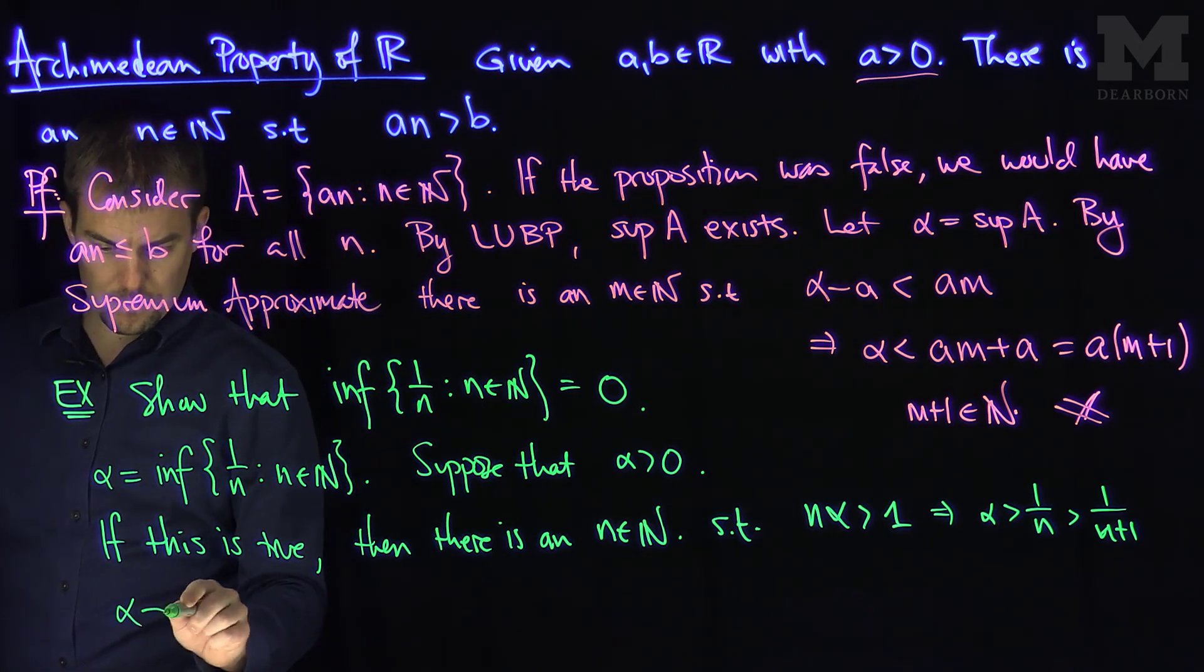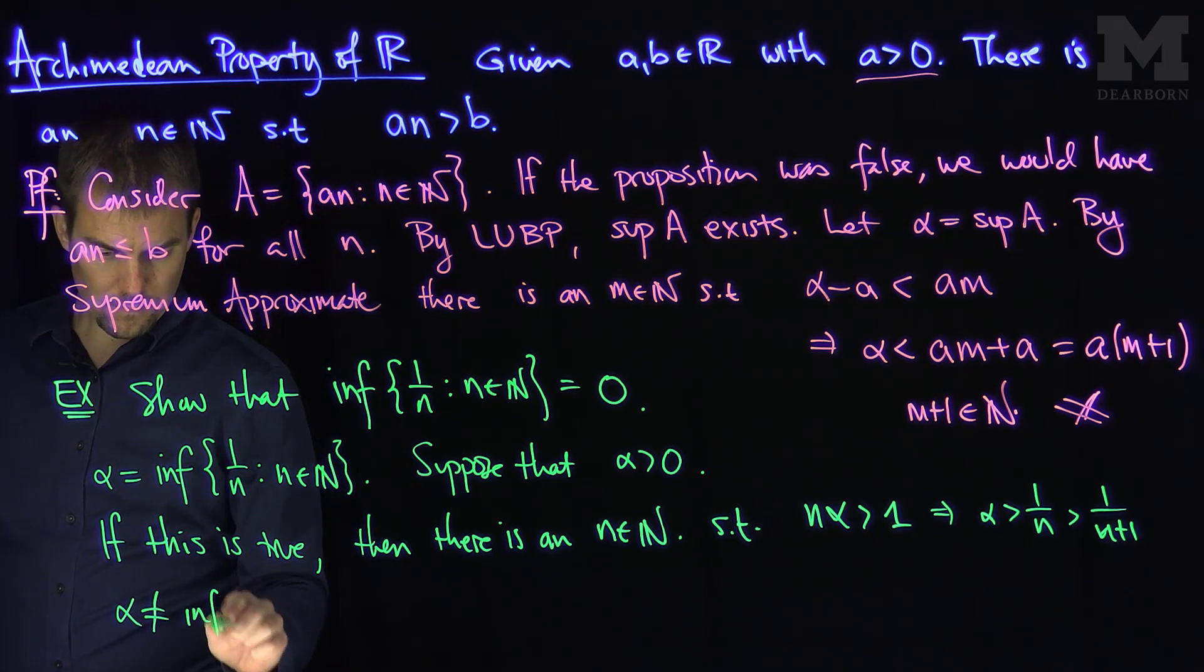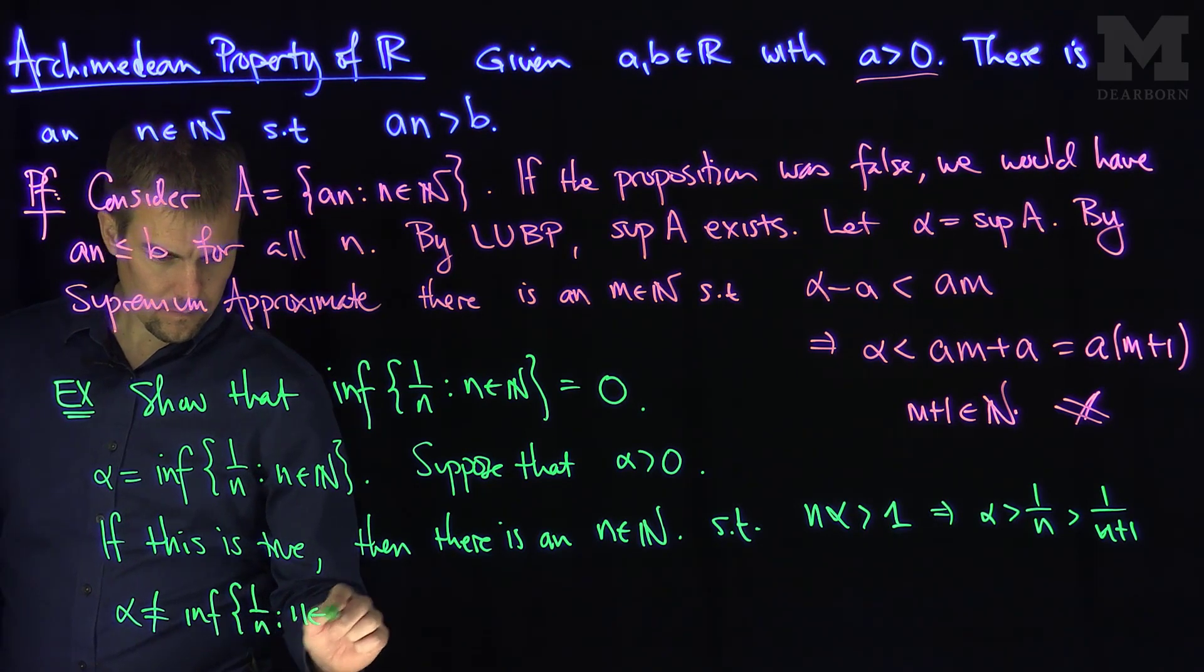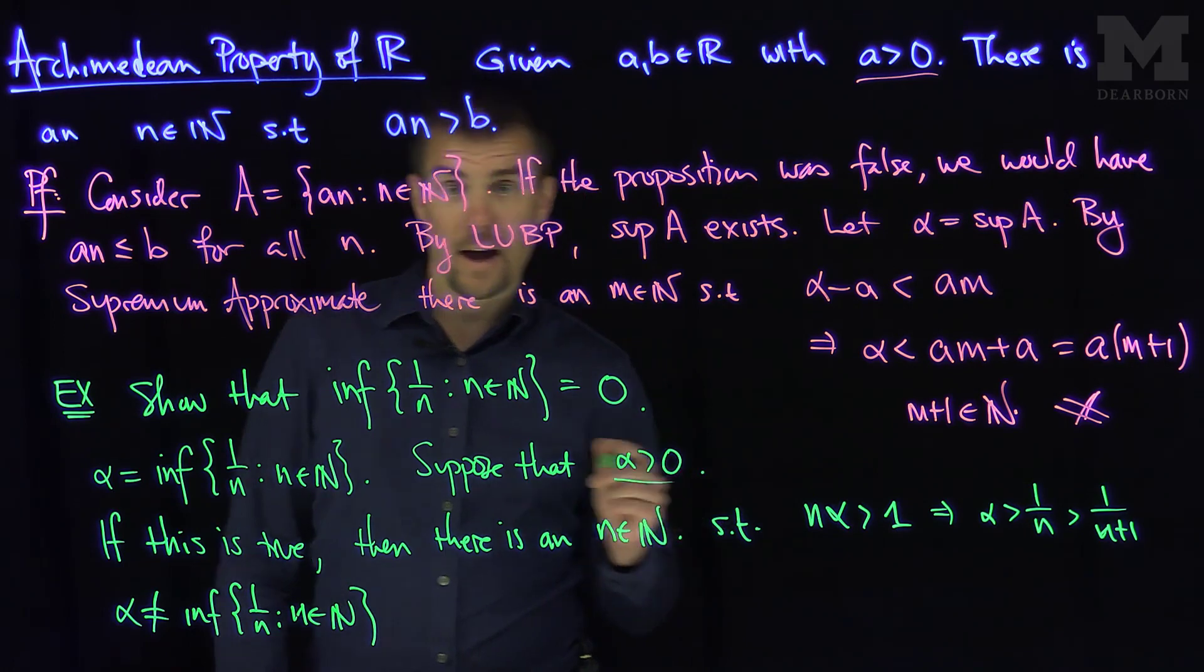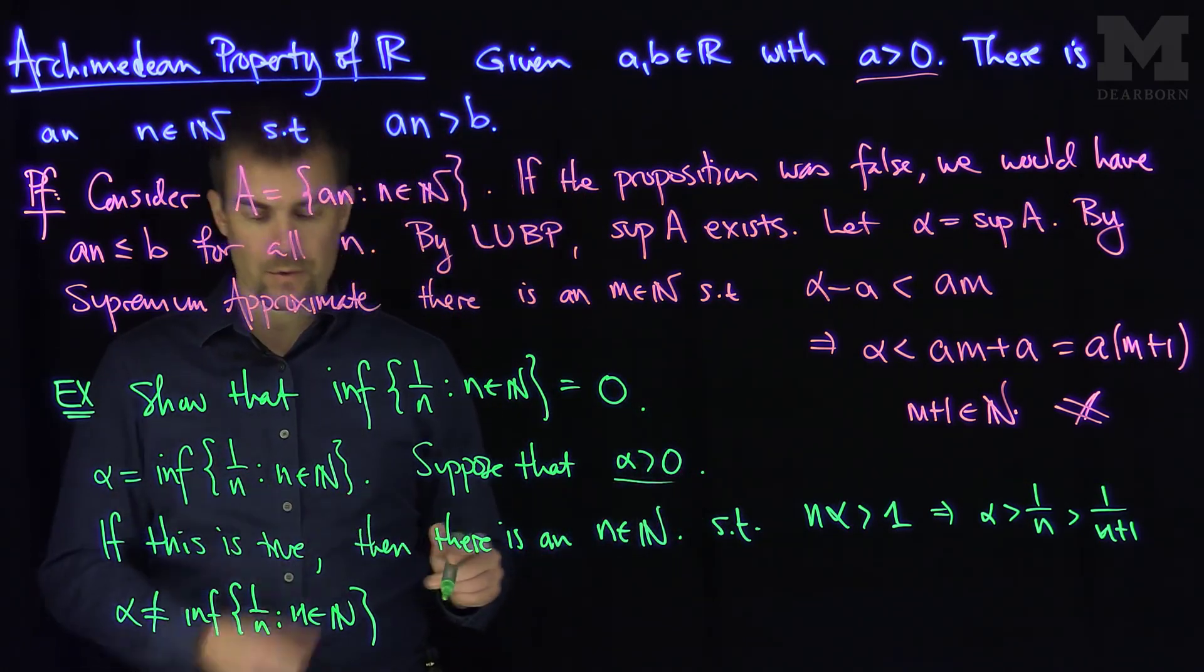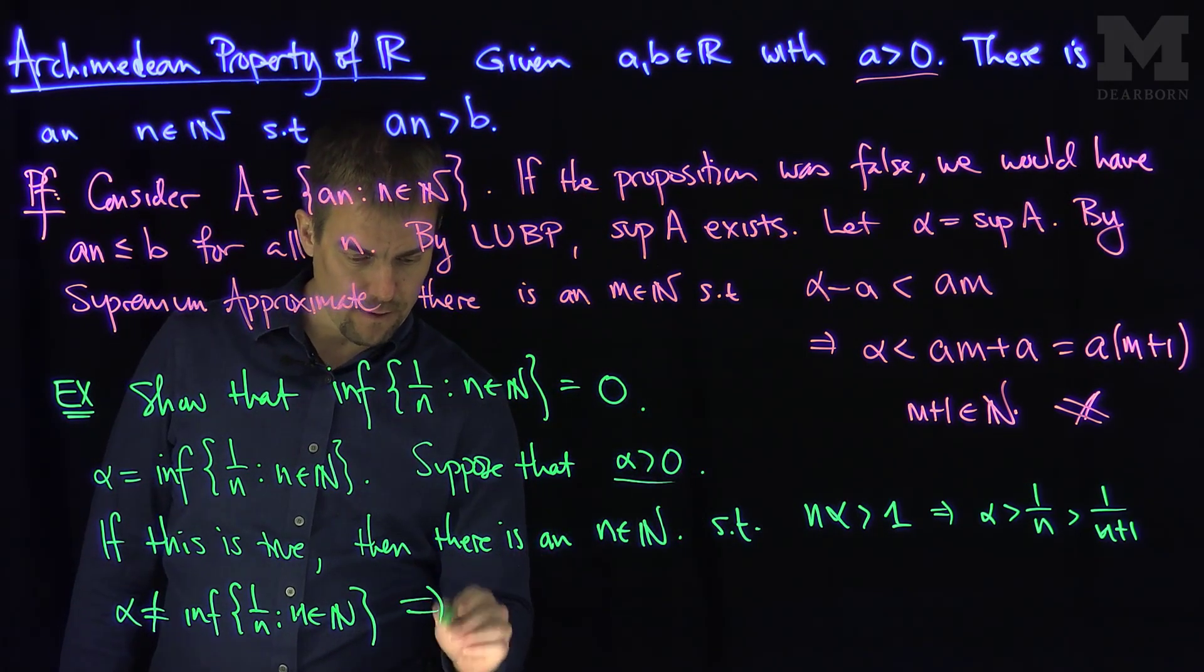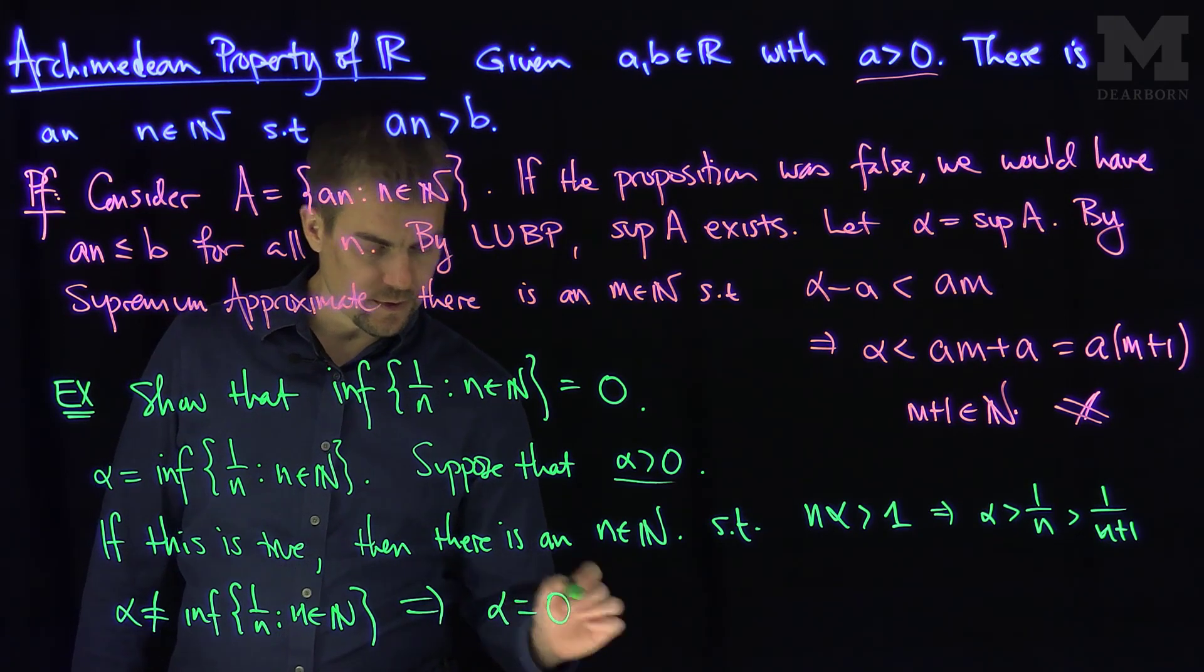and that says that alpha cannot be the infimum. Hence, alpha is not the infimum. So our conclusion, therefore, is that alpha equals zero. It can't be negative because there's no negatives in the set. Any negative could be pushed beyond, so that tells us that alpha equals zero.